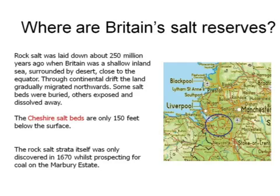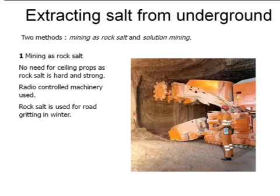Britain is fortunate in that it has its own underground deposits of salt. These are in Cheshire and they're the remains of an ancient sea which dried up and was then overlaid by other rocks. There are two methods for extracting salt from underground: mining as shown here, and solution mining. Mining is only done for rock salt, which is grit spread on roads in winter to melt ice and snow. This contains not only salt but also some sand grains which would have been in the sea that dried up.